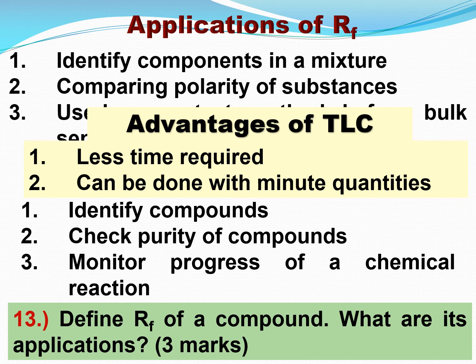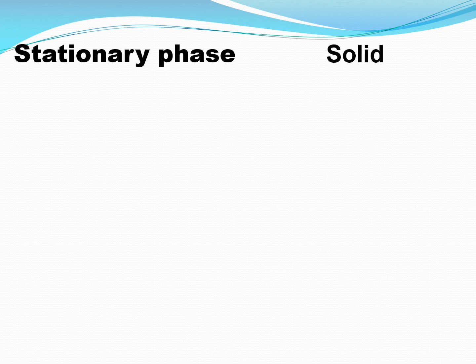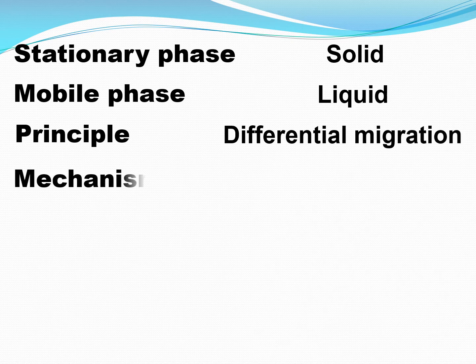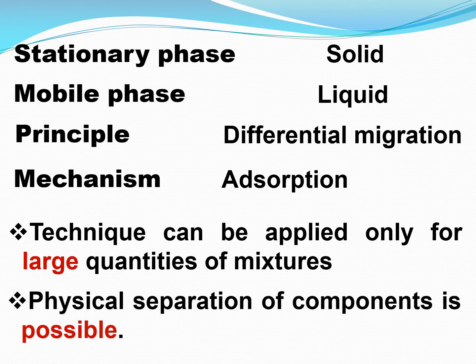The next technique is column chromatography. Here the stationary phase is a solid, the mobile phase is a liquid, the principle is differential migration, and the mechanism is adsorption — all the same as TLC. The difference is that column chromatography can be applied for large quantities of mixtures, and physical separation of components is possible.